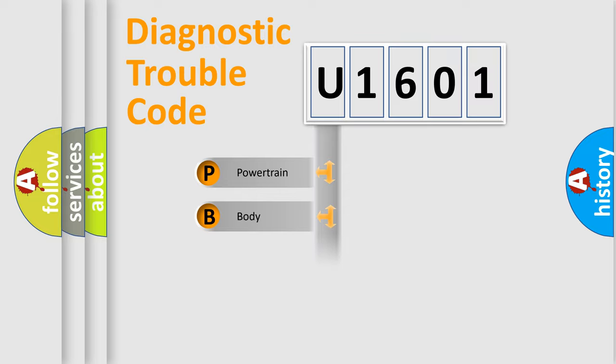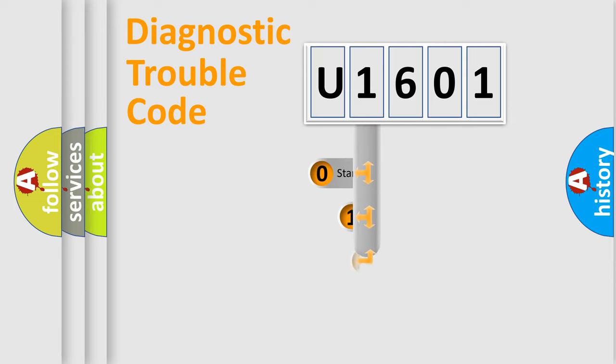We divide the electric system of automobile into four basic units: Powertrain, Body, Chassis, and Network. This distribution is defined in the first character code.